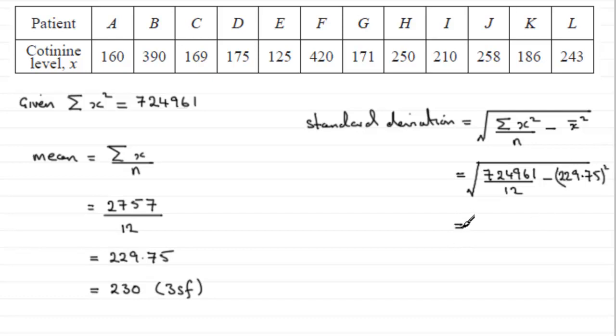And if you work that out on your calculator, what you should find you get is 87.340449 and so on. And let's say we round that to three significant figures. That's going to be 87.3 to 3SF.